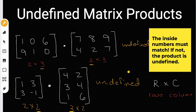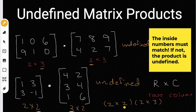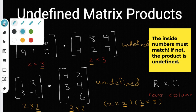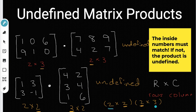So whenever you multiply, the inside numbers have to match up. Now if they do match up — like let's say we have a two by two multiplied by a two by three — one is a two by two and the other is a two by three, but the inside numbers match up. This two and this two are equal, so you can actually multiply these two matrices. Then the outside numbers are used for the product, so the result is going to be a two by three.